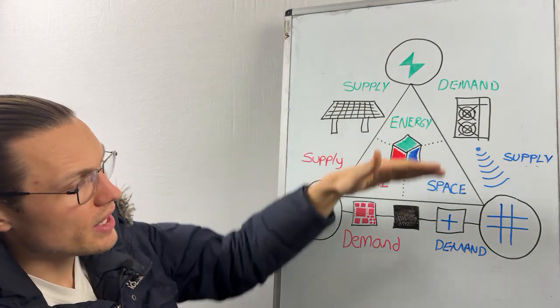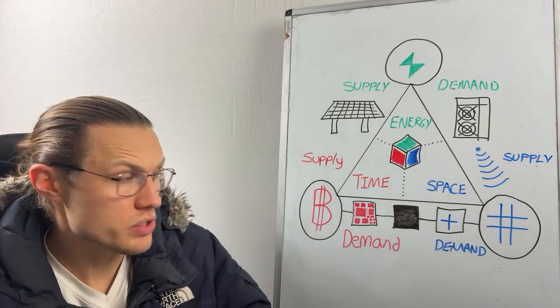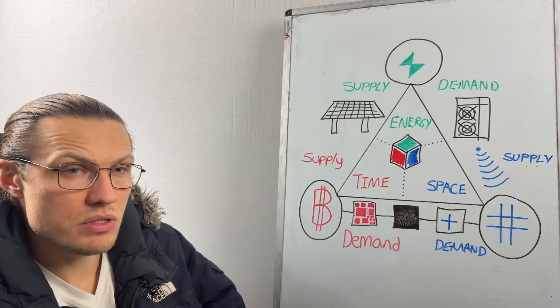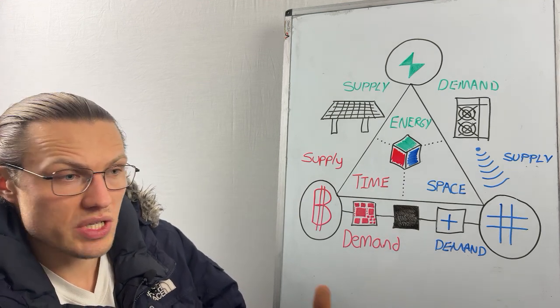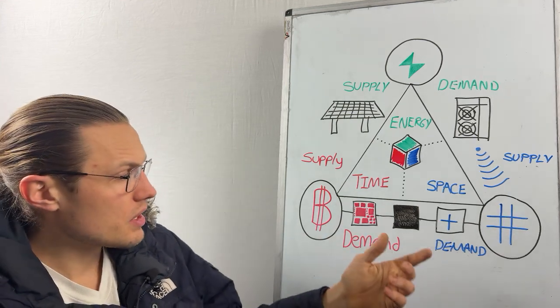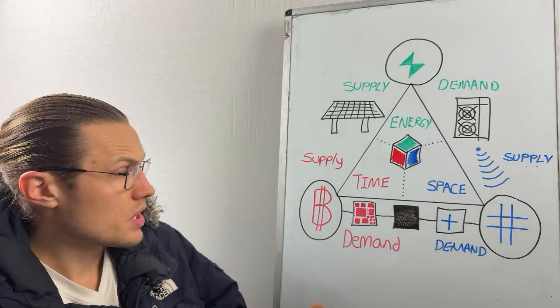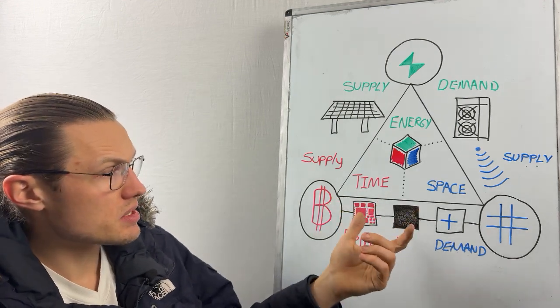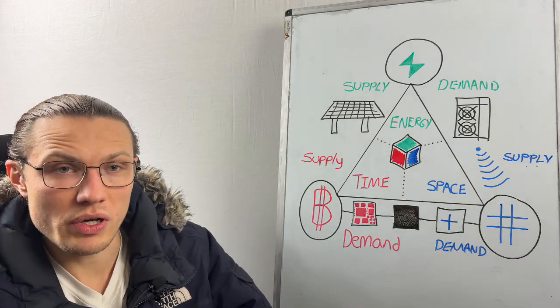Compute power is the wormhole between the physical side and the digital side. What is hash power producing? It's producing blocks, and those blocks are storage space for transaction information, bitcoin data, money. The blockchain is a series of blocks being regulated by space and time.